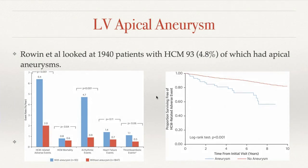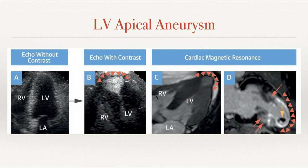LV apical aneurysms, also new to the 2020 guidelines, were studied by Rowan et al. in almost 2000 patients with HCM — about 5% had apical aneurysms. HCM-related adverse events including arrhythmic events are much higher in patients with apical aneurysms, and they have a lower survival rate on Kaplan-Meier curves. Echo contrast is very important to assess the apex: without contrast you might not identify an apical aneurysm, but with contrast or cardiac MRI it can be clearly seen.